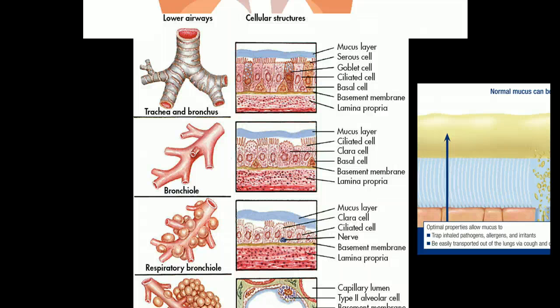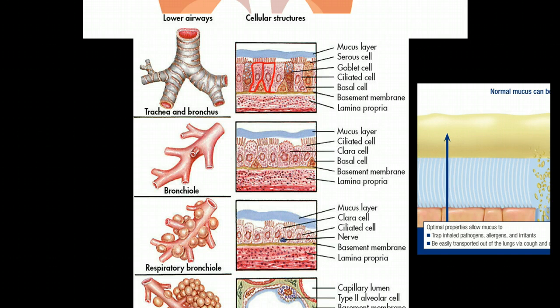I wanted to talk about the different cell types that you will see lining the airways at different levels. Because the lining of the airway changes from level to level. Here in the trachea and the large bronchi, we have a simple pseudostratified columnar epithelium.